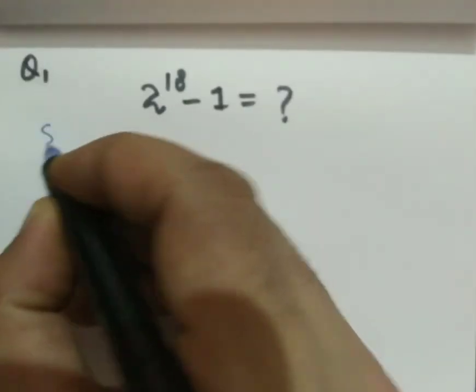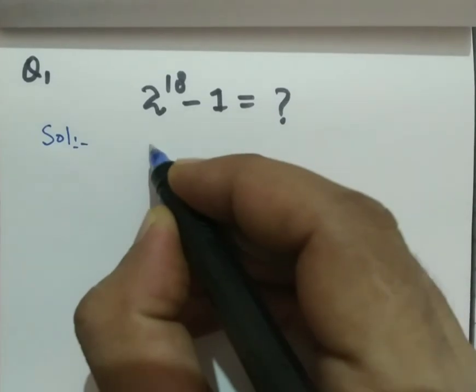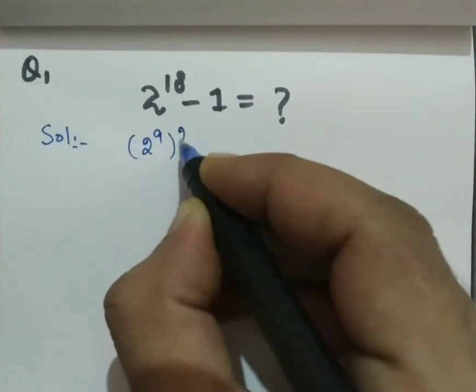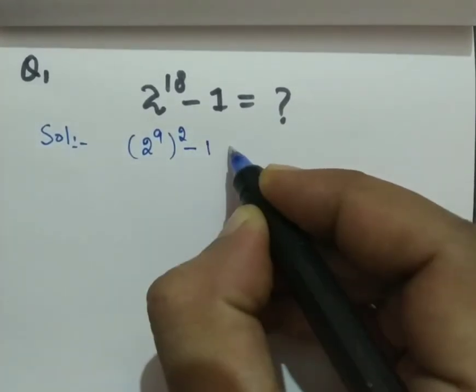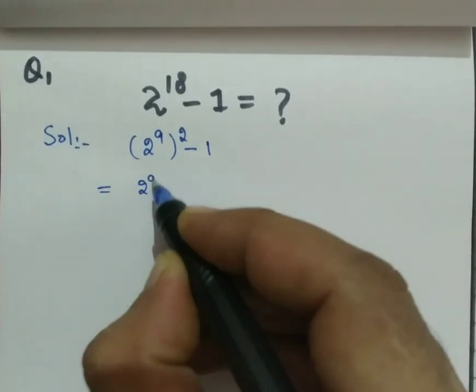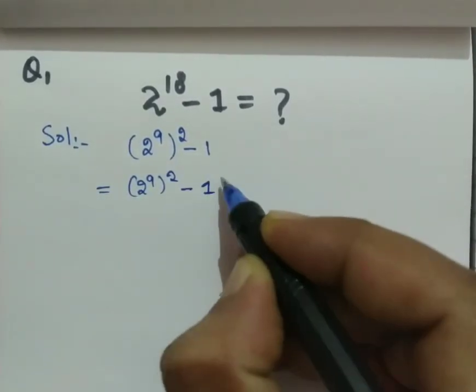Let's start the solution. 2 raised to the power of 18 we can write as (2^9)^2 minus 1. Next step: (2^9)^2 minus 1^2.